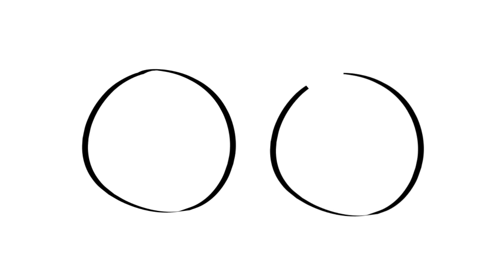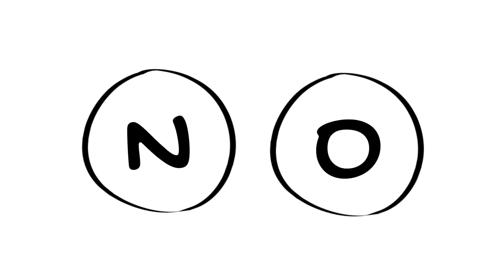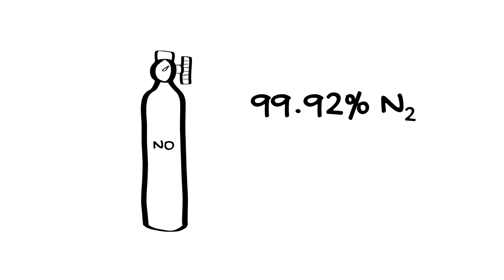Nitric oxide is a colorless, non-flammable gas formed by joining a nitrogen and oxygen atom together with a double bond. It is stored in a gas cylinder containing 99.92% nitrogen and 0.08% nitric oxide, which is 800 parts per million.